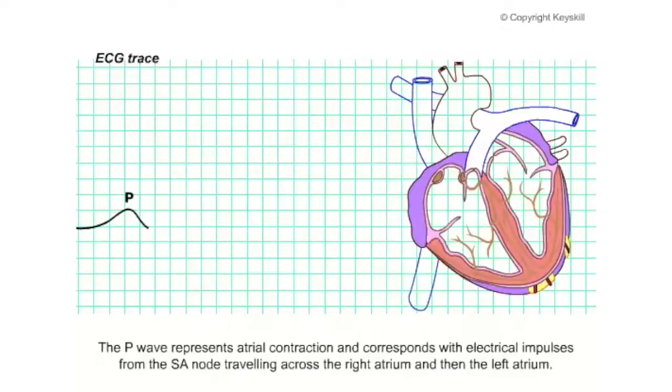The P wave represents atrial contraction and corresponds with electrical impulses from the SA node traveling across the right atrium and then the left atrium.